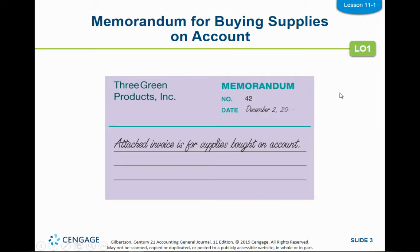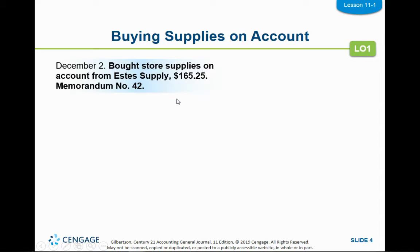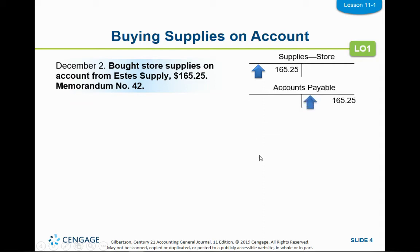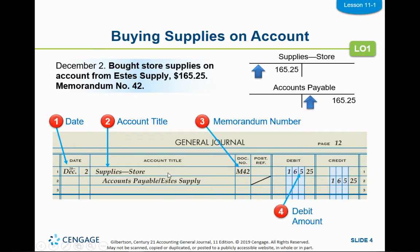Let's talk about buying supplies on account. The memo, like this one here, is going to be the source document for purchasing supplies on account. In that transaction, you're going to increase supplies because you're buying supplies. Supplies as an asset goes up with a debit, and then you're going to have the date and supplies store as your debit, your memo number, and your debit amount.